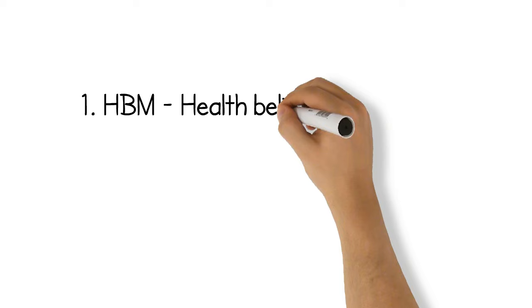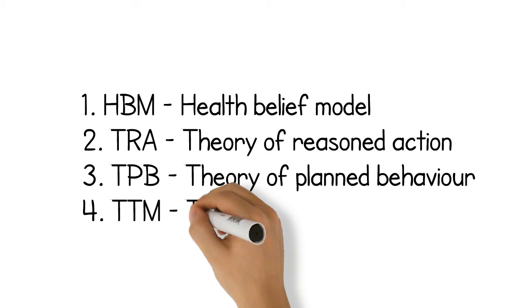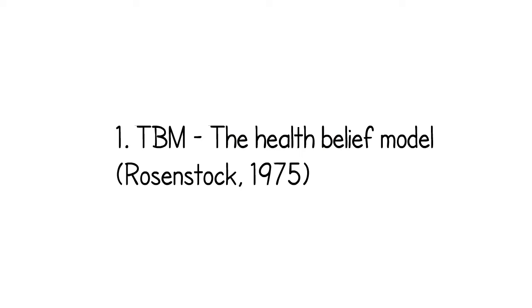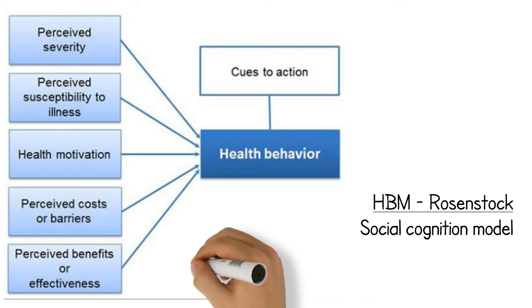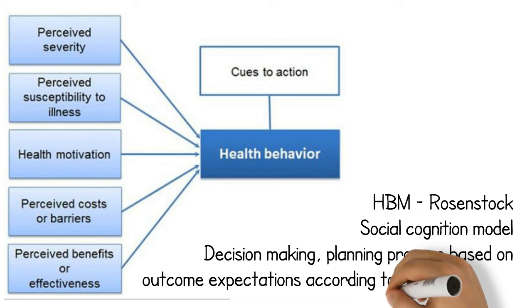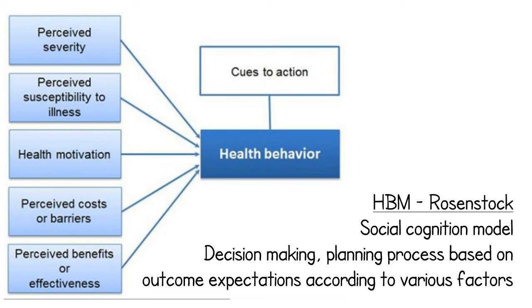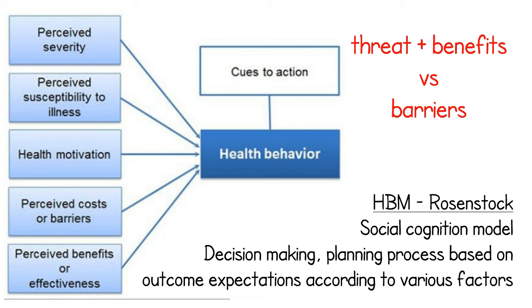Now let's take a look at some of the key models in behavioural change: the health belief model, the theory of reasoned action, the theory of planned behaviour, and the trans-theoretical model. The health belief model is a health-specific cognition model that construes behaviour as a decision-making process and assumes behaviour to involve planning ahead based on outcome expectations, where many factors contribute to behavioural change. For people to adopt recommended physical activity behaviours, their perceived threat of disease and its severity and benefits of action must outweigh their perceived barriers to action. The health belief model has been most frequently used in healthcare settings to increase the uptake of healthcare services such as increasing acceptance of immunisation and compliance with medical treatment.